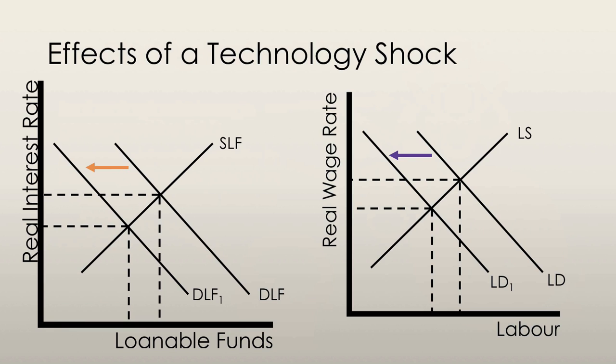Let's say that a certain technology has been discovered which has made existing capital completely obsolete. If this occurs, productivity is temporarily reduced. Firms would expect profits to fall, and would thus undertake less investment expenditure. This would cause the demand for loanable funds curve to shift to the left, signifying a decrease.